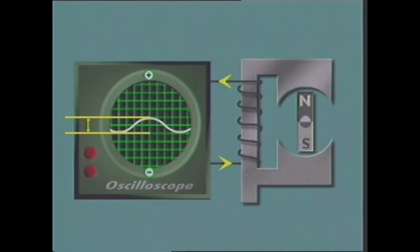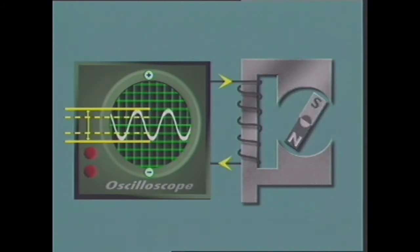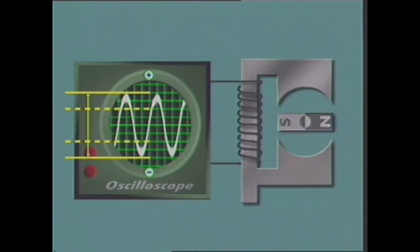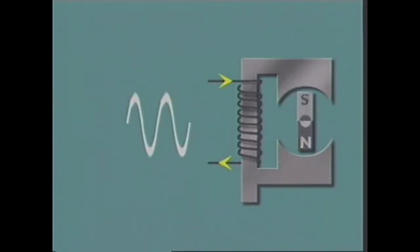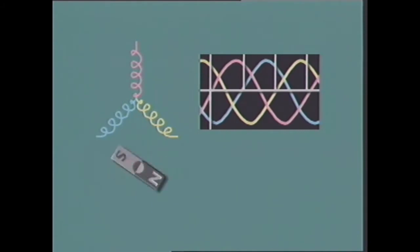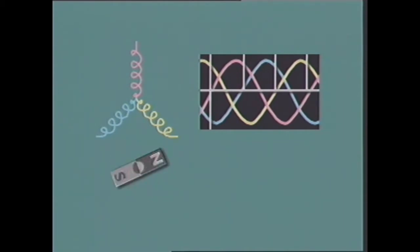The induced EMF also depends on the speed at which the magnet rotates and on the number of turns of wire on the stationary coil. This simple model has only one stationary coil, which is called single phase. In a real automobile alternator, three separate coils of wire or phase windings are common. The windings are arranged so that when the magnet is rotated, it generates a three phase output. The phases are equally spaced in time and this results in a phase shift of 120 degrees.